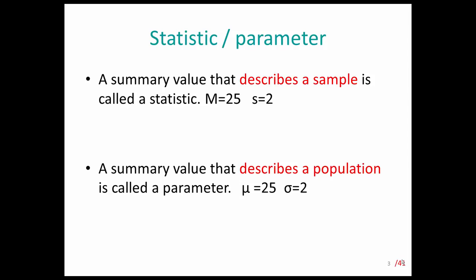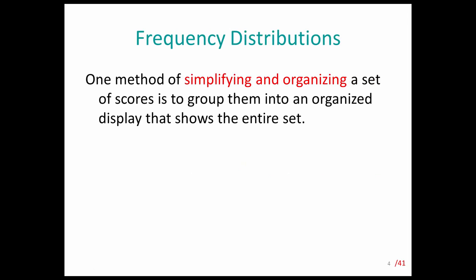Usually we show the statistic using an English alphabet and the population parameter is shown in the Greek alphabet. For example, M equals 25 or S equals 2 for sample statistics. But for parameters, the population average is shown with mu equals 25, and instead of S for standard deviation, we use sigma equals 2.